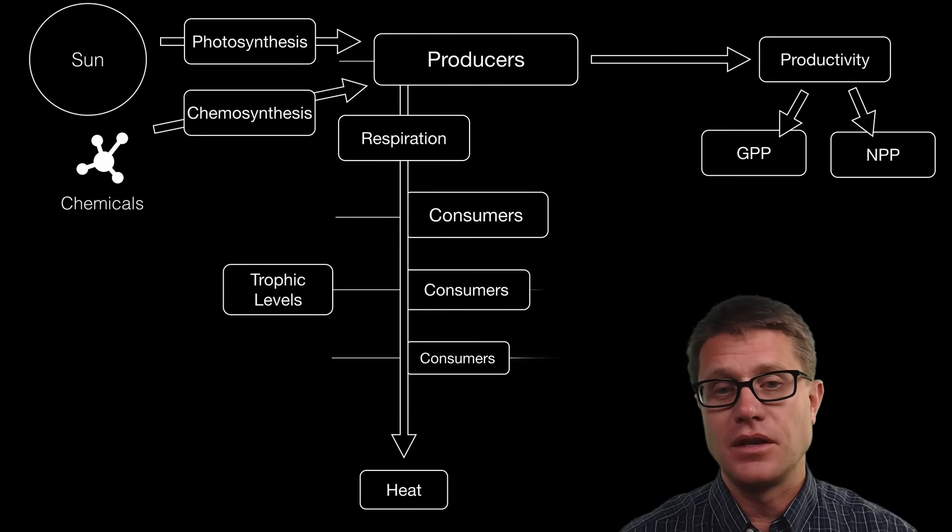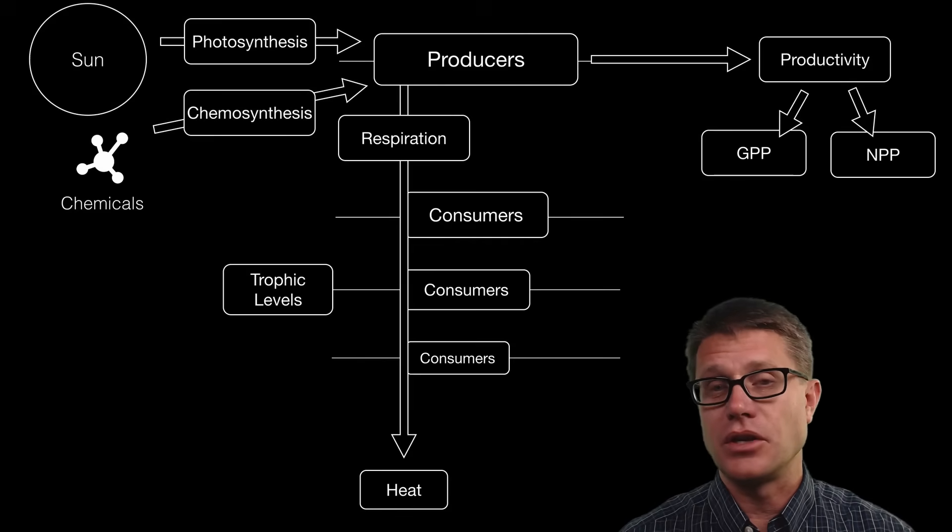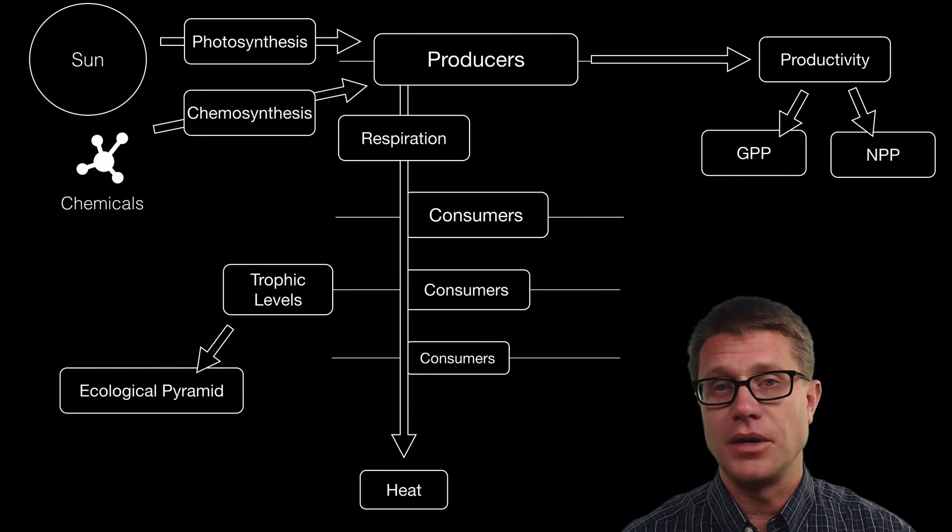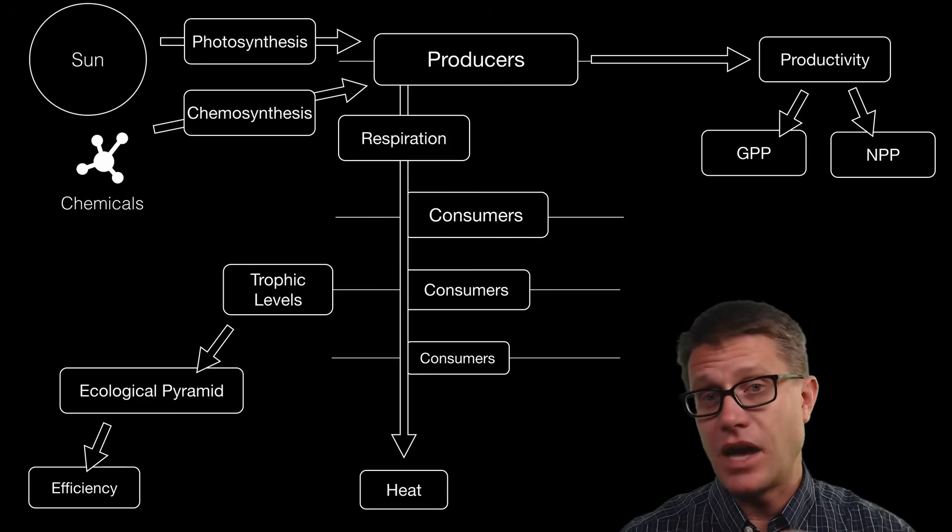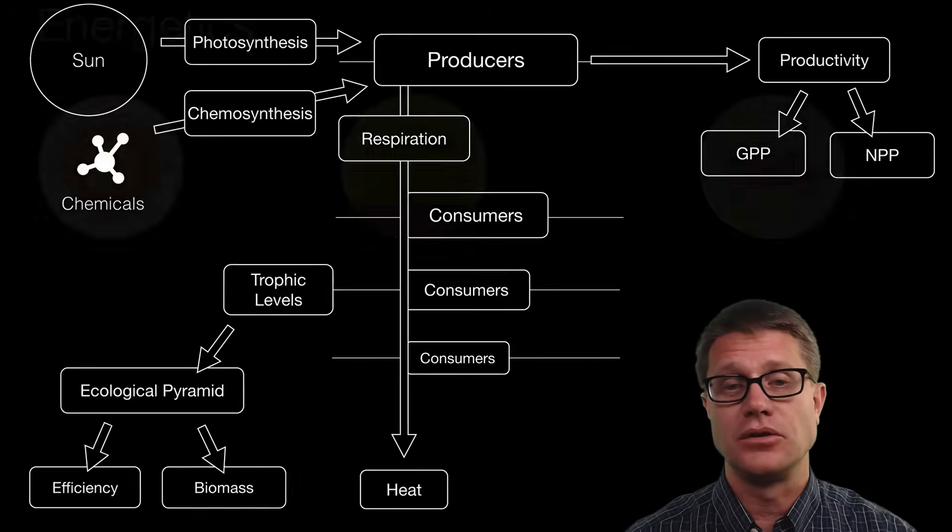Now each of the levels within this food chain is going to be a trophic level. And we are losing energy along the way. And so a good way to measure this is using an ecological pyramid. We can measure the efficiency, in other words how much energy makes it to the next level. We can measure the energy at each level. Or we can measure the biomass. How much living material do we have.